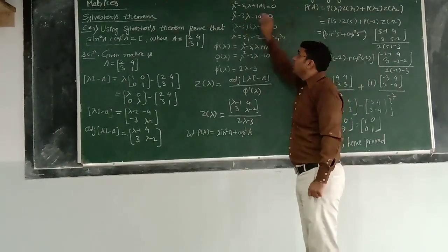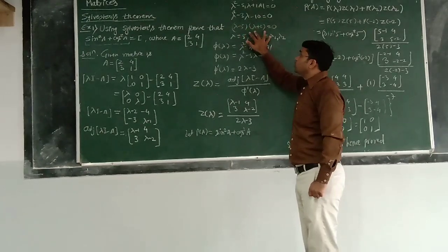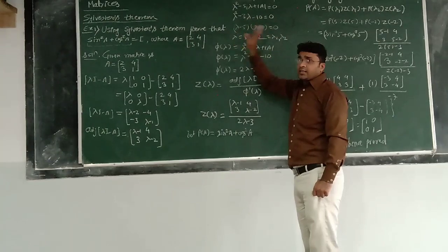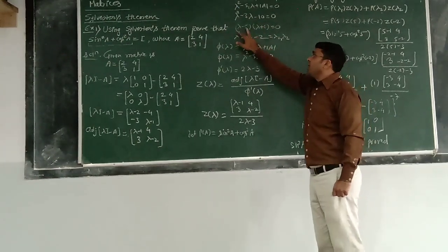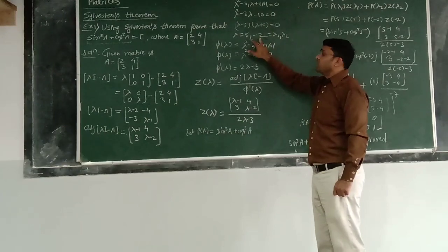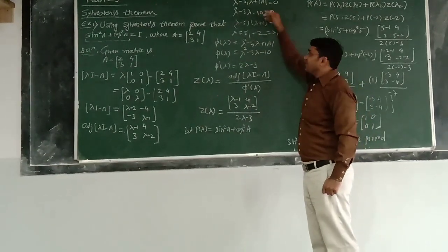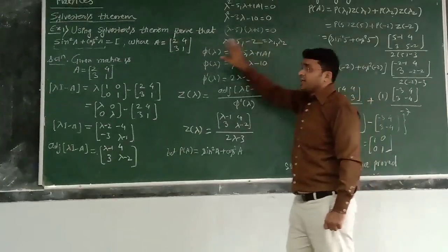We find out the factor first of all. It is lambda minus 5 lambda plus 2. Multiplication is minus 10. Addition is minus 3. So, this is correct. And then we find out the roots. This would be lambda equals to 5 and lambda equals to minus 2 are the two roots for this equation. And these are nothing but the eigenvalues for this matrix.